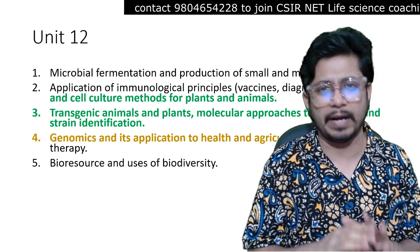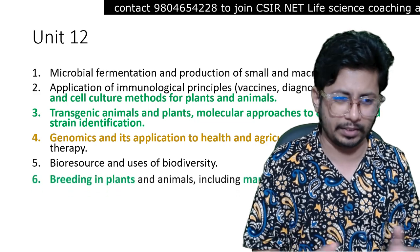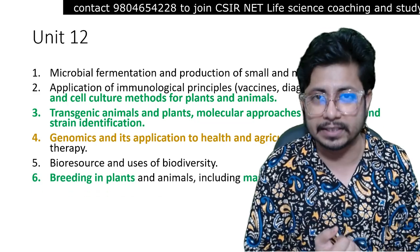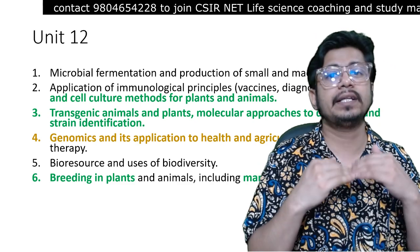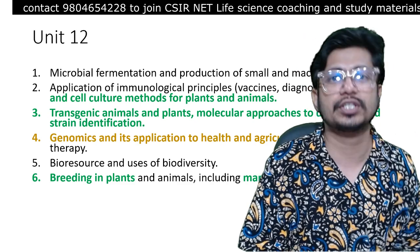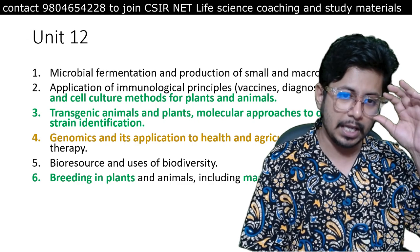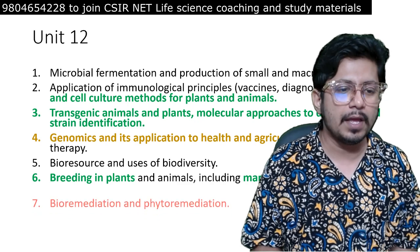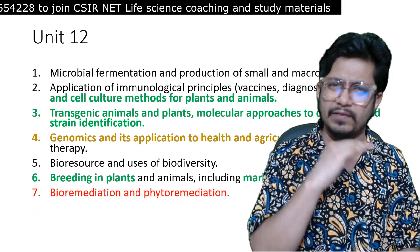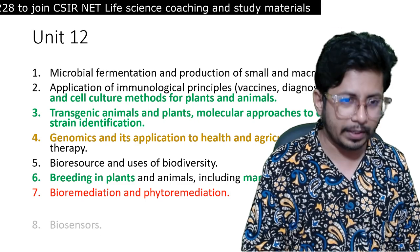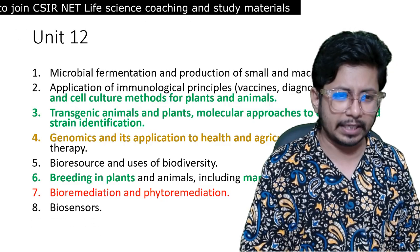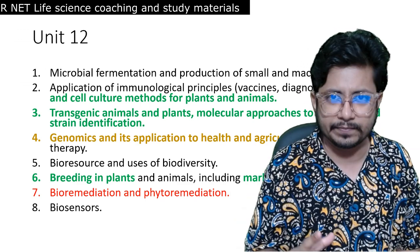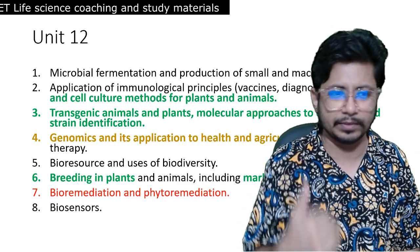Bio-resources and use of biodiversity is not required at all. Plant breeding — particularly breeding involving marker-assisted selection (MAS), the importance of MAS over conventional or traditional breeding methods, and QTL mapping related to marker-assisted selection — is important. Bioremediation and phytoremediation are of least importance, red color. Biosensors are not that important either. Many topics in this list remain untouched and questions are not asked from them quite often.